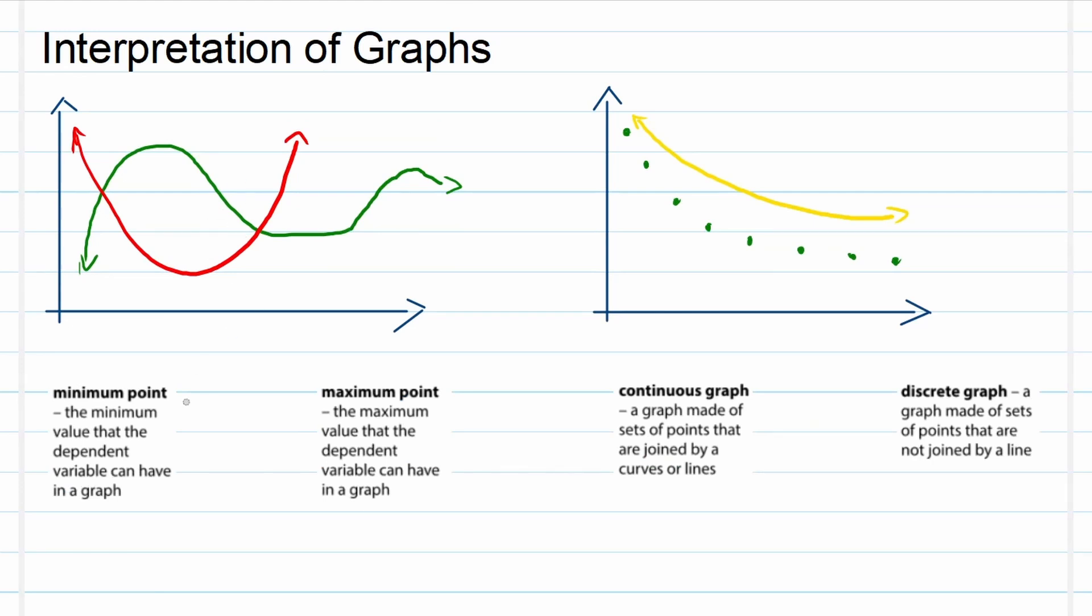Let's look at the second part of this video: minimum and maximum point in the graph. Now if you observe over here, the green graph, you can see its highest output value, the highest y value, right over there. That is the highest it will go, that's the maximum point. Whenever we look at the maximum or minimum point, we always look at the output value, that which is on the y-axis. So maximum point is the maximum value that the dependent variable can have in the graph. Remember, your dependent variable is on the y-axis, your independent variable is always on the x-axis.